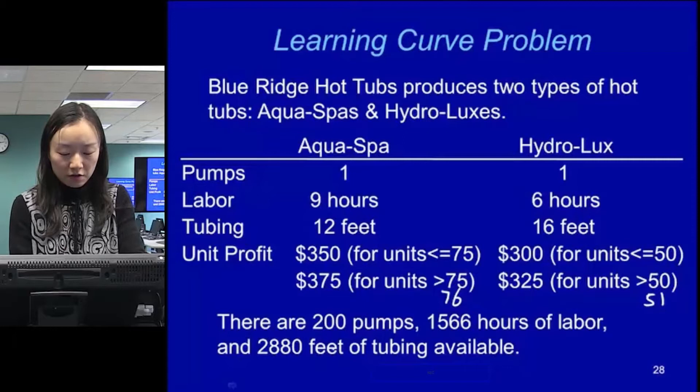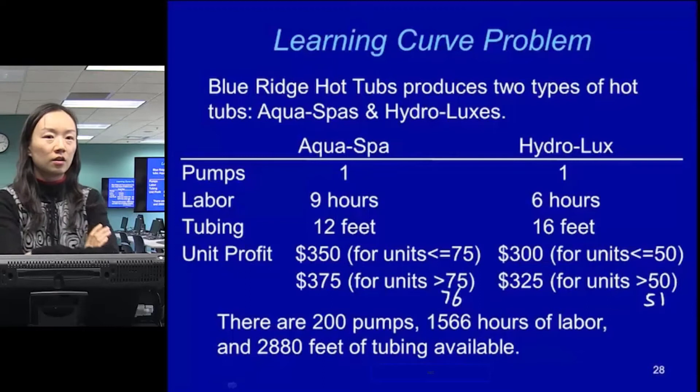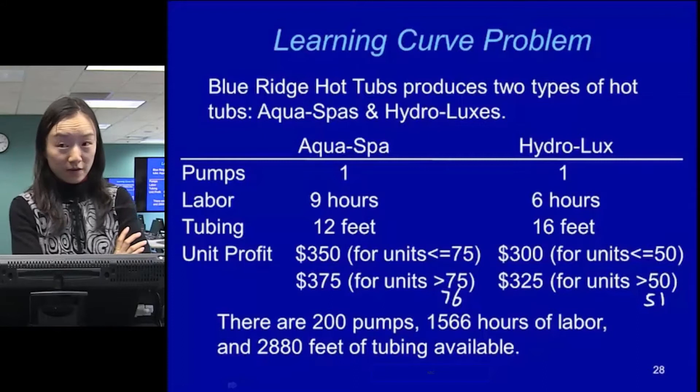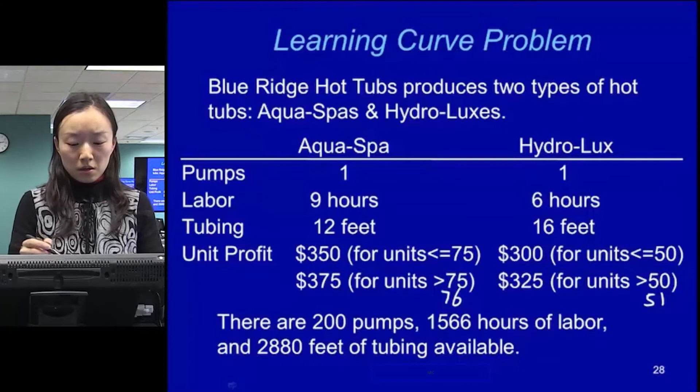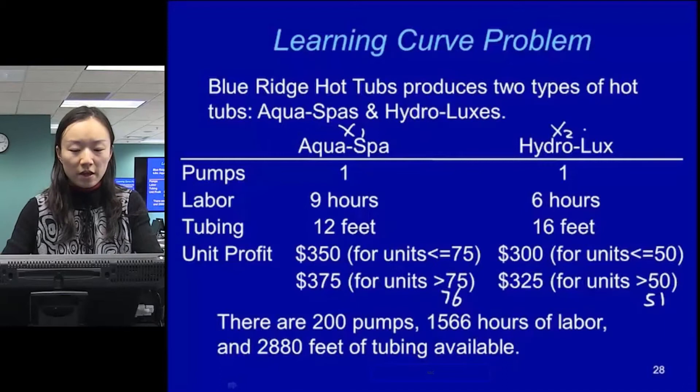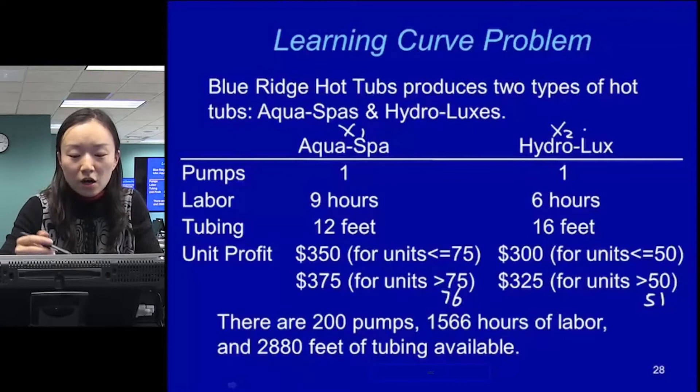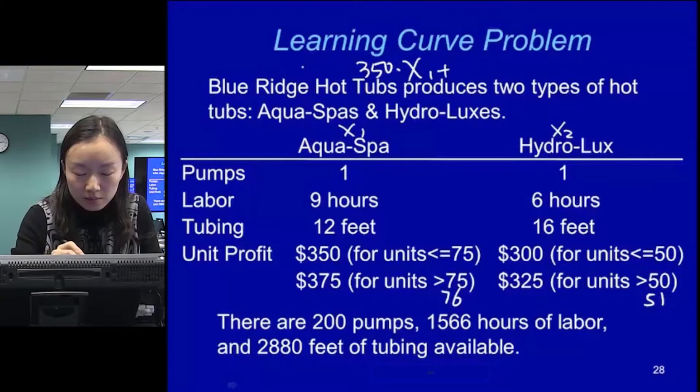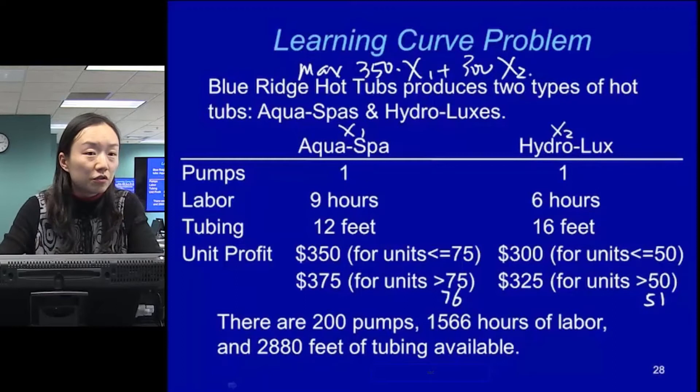Now how do we formulate this problem? First we need to think about decision variables. We had x1 and x2, representing the number of equal spots and hydrolysis to produce. Our objective function was maximize 350x1 plus 300x2, because the unit profit was fixed.